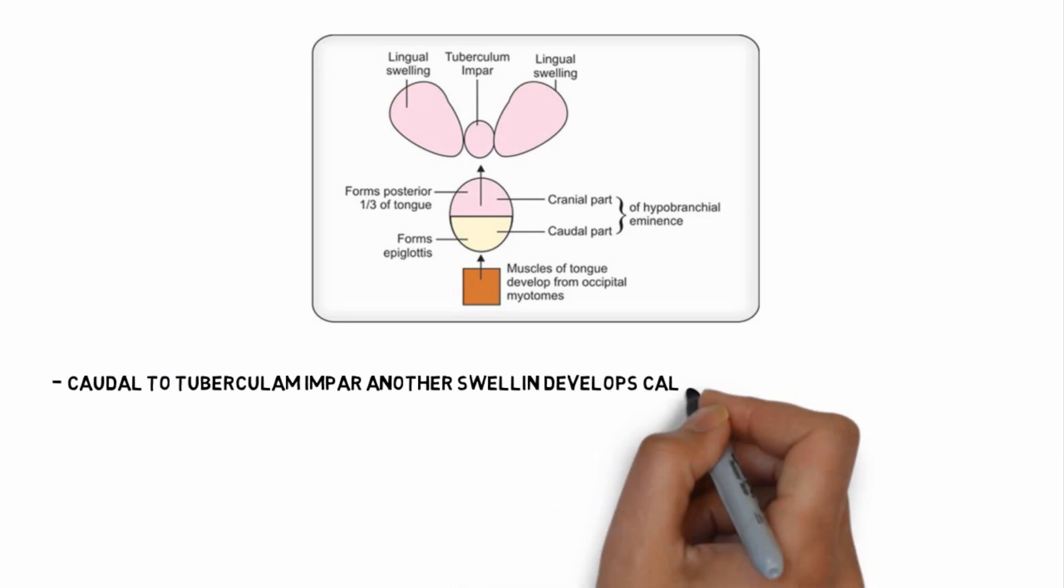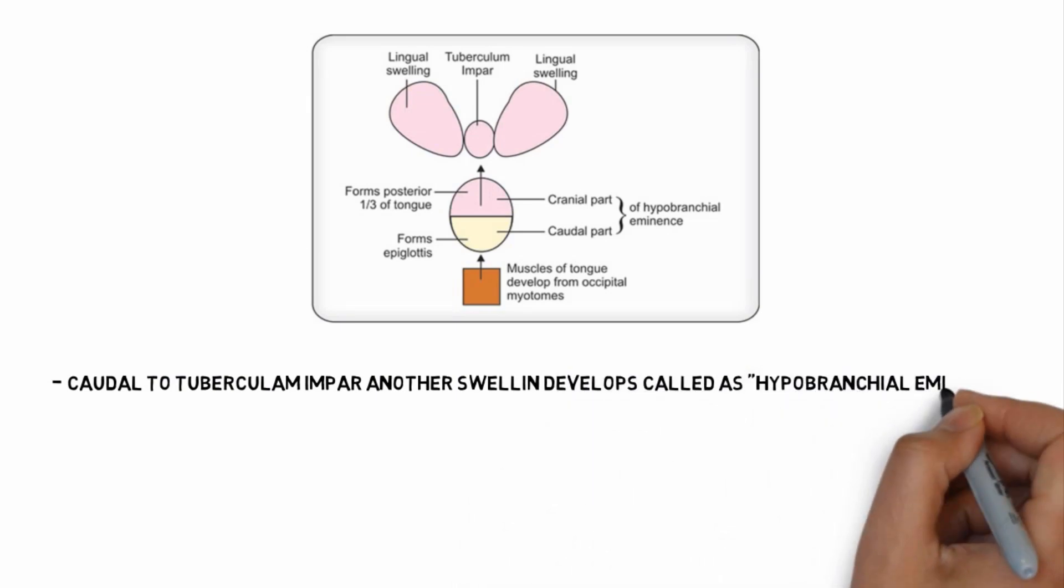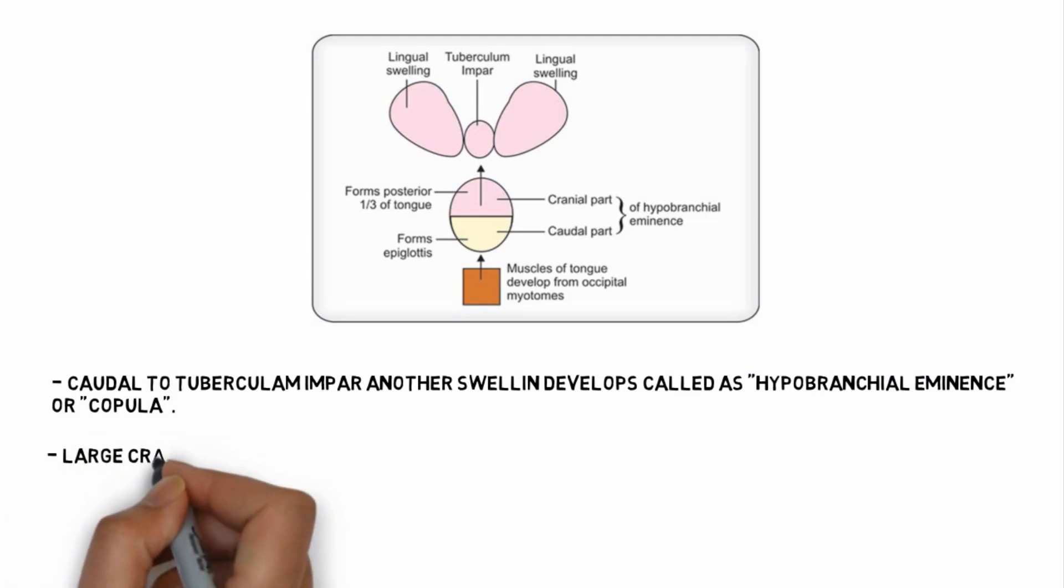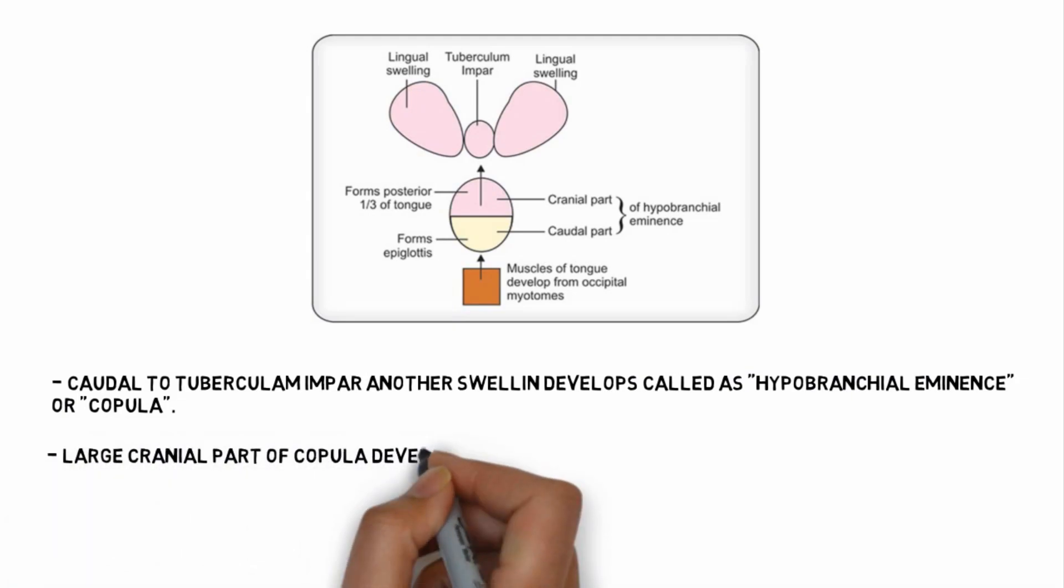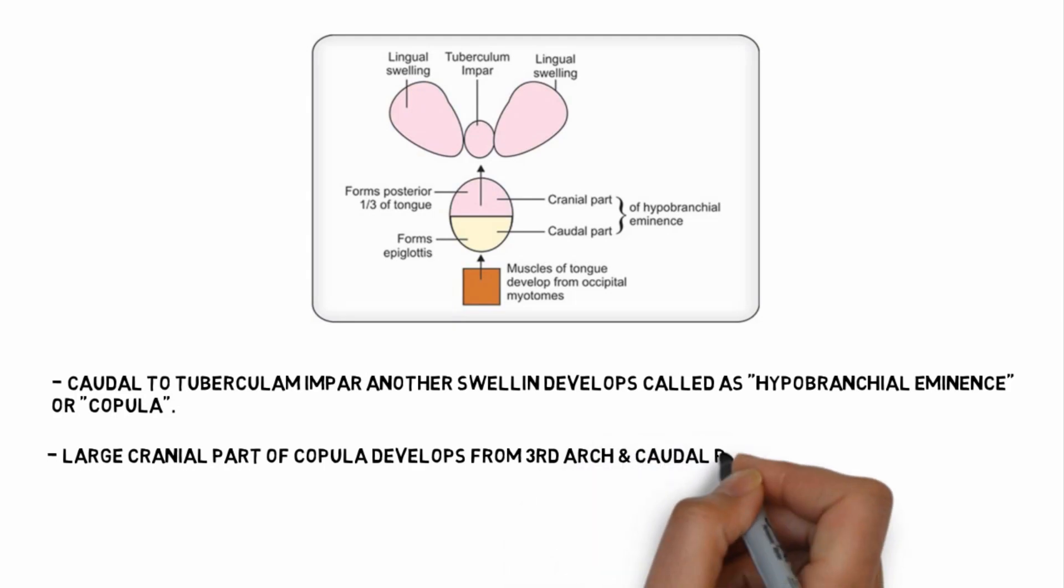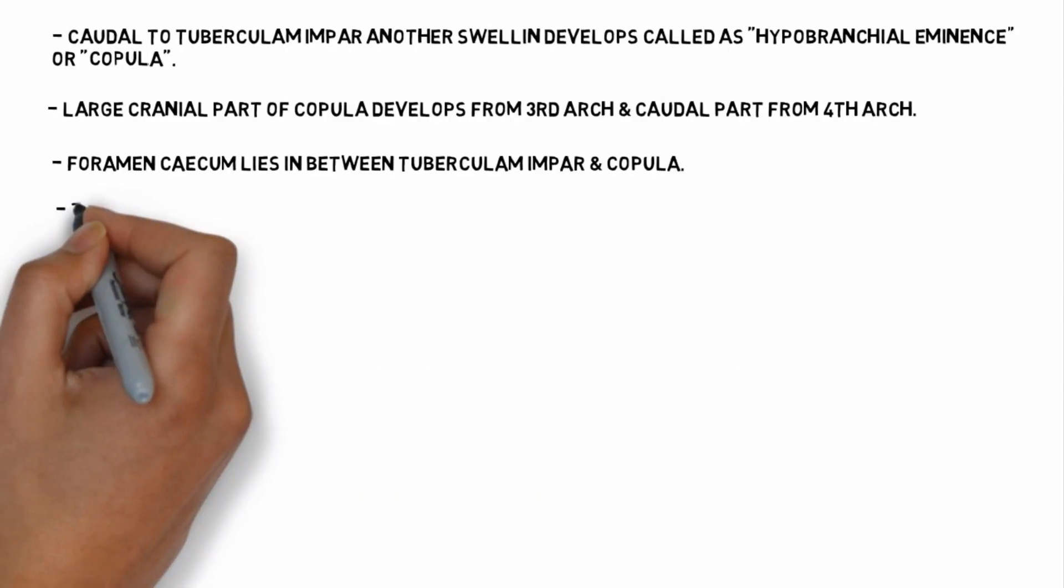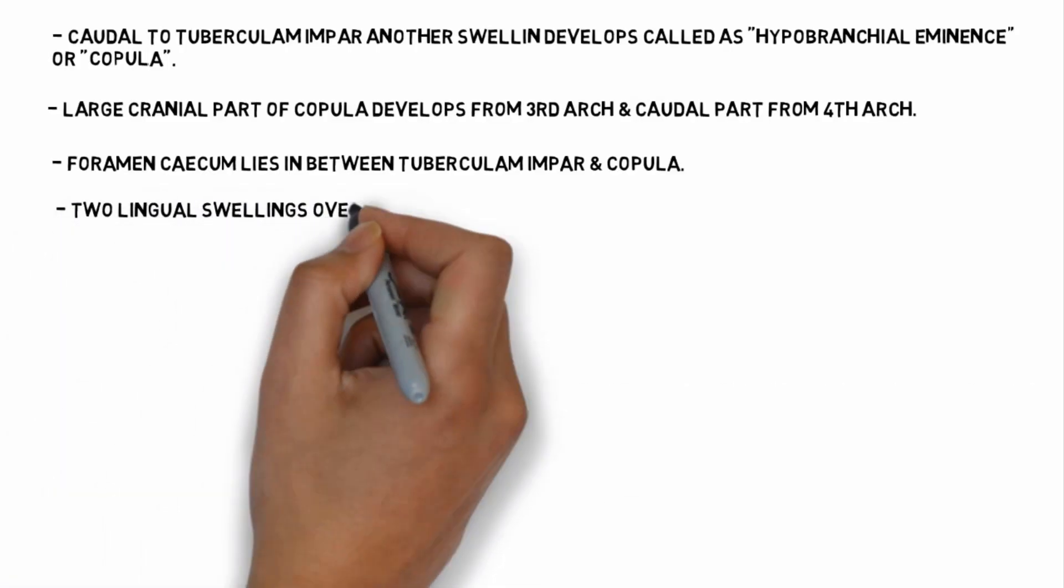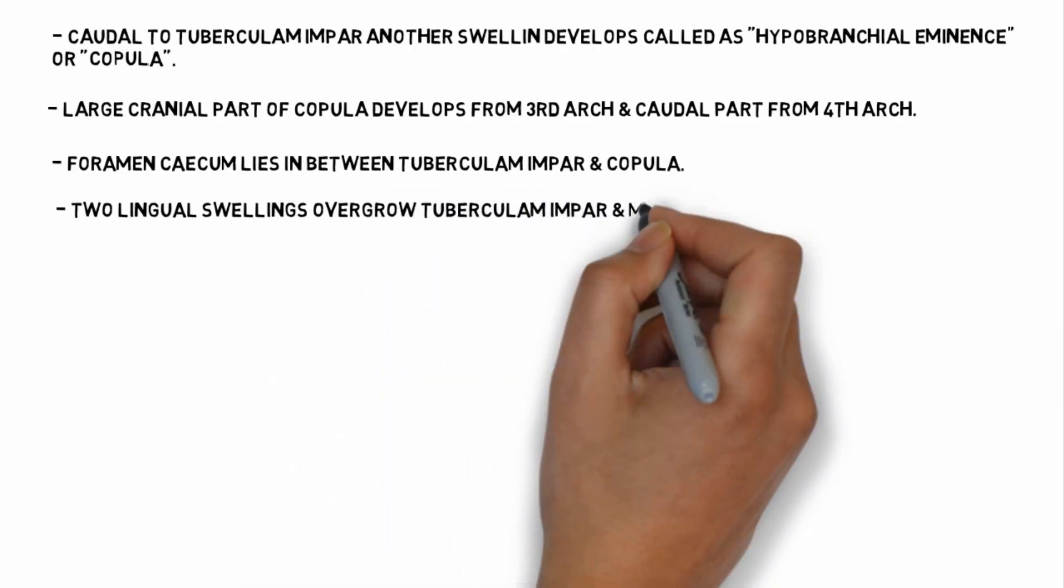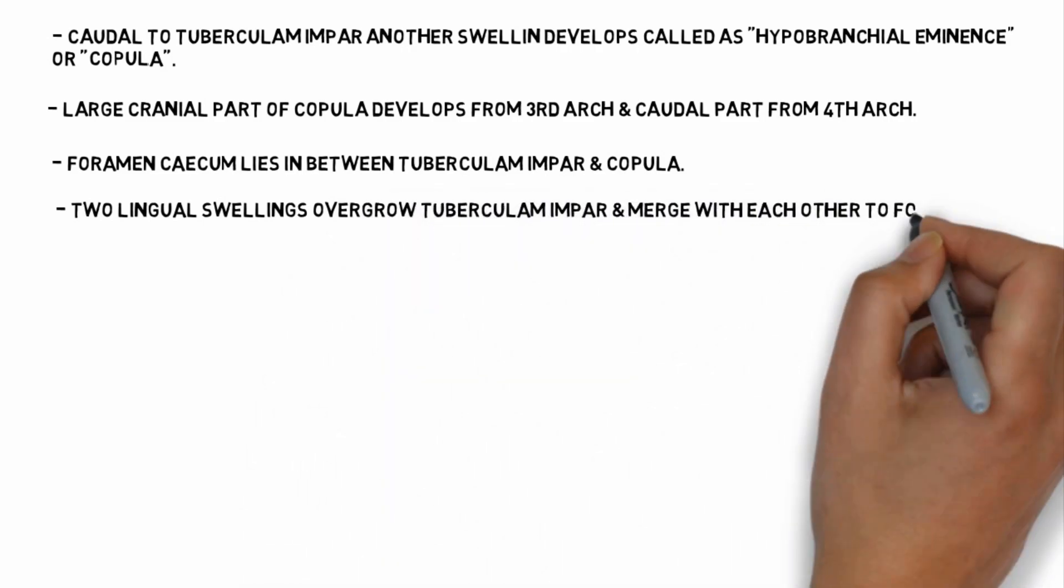Caudal to tuberculum impar, another swelling develops called as hypobranchial eminence or copula. Copula is divided into cranial part and caudal part. Large cranial part of copula develops from third arch and caudal part from fourth arch. Foramen cecum lies between tuberculum impar and copula.